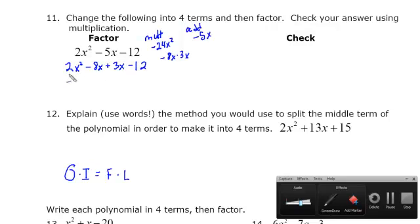And we can factor using our grouping method, the same way we were doing before. Your GCF between these two is 2X. The GCF between 3X and negative 12 is a positive 3.